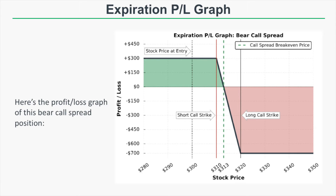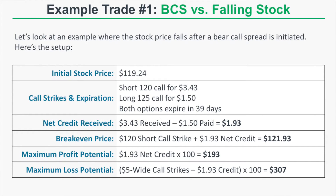Now let's look at some real bear call spread examples. Example number one is a bear call spread versus a falling stock price. The initial stock price is $119.24. We construct the bear call spread by selling the 120 call for $3.43 and buying the 125 call for $1.50. Both options expire in 39 days. This is a $5-wide short call spread, giving us a net credit of $1.93.